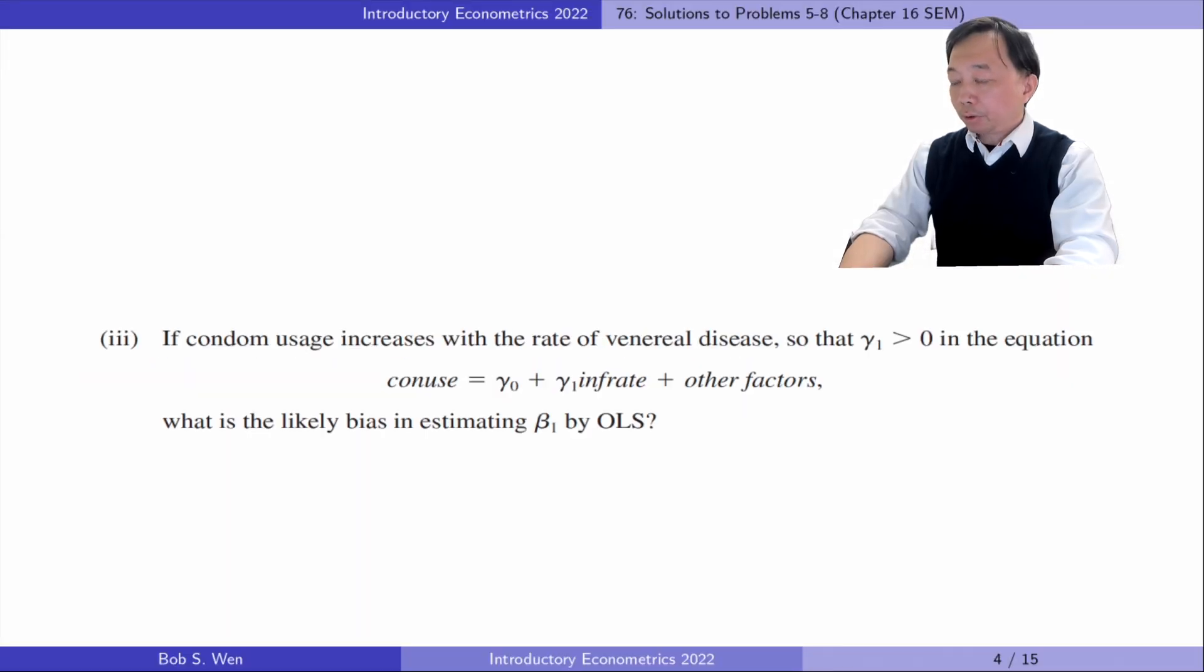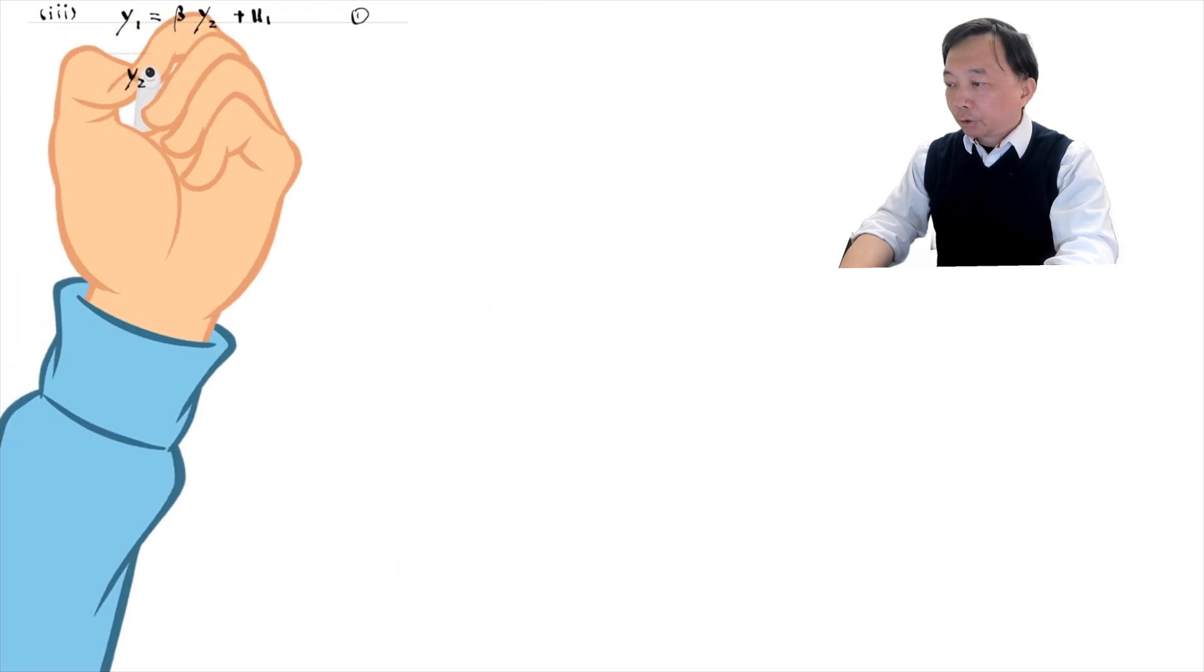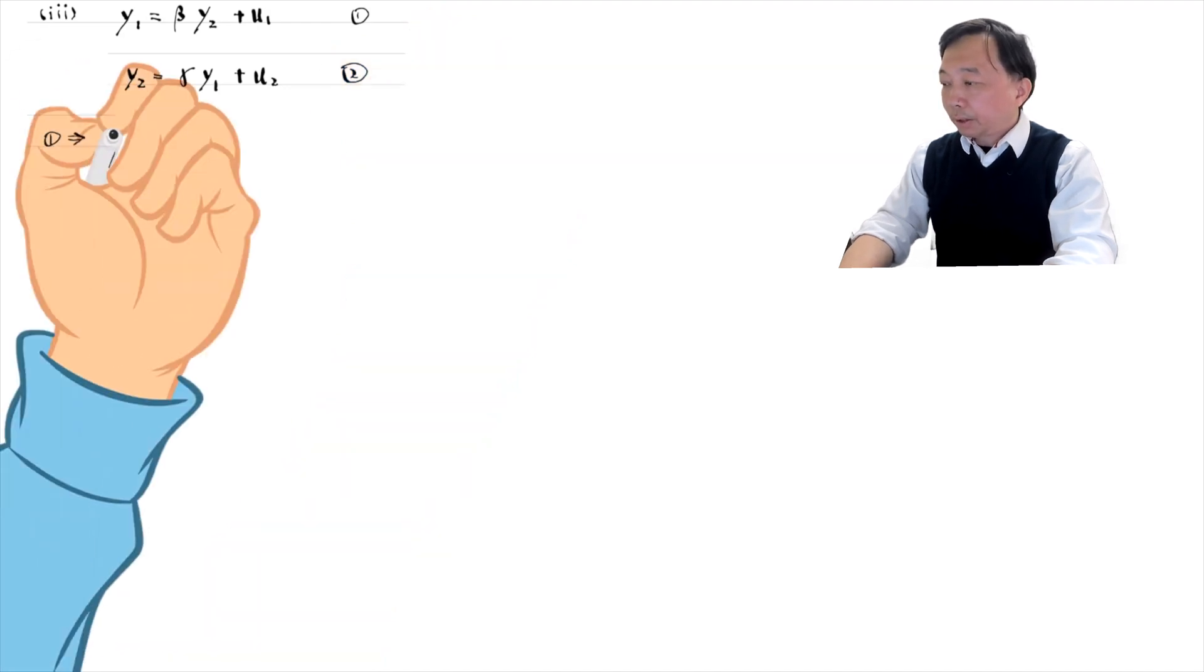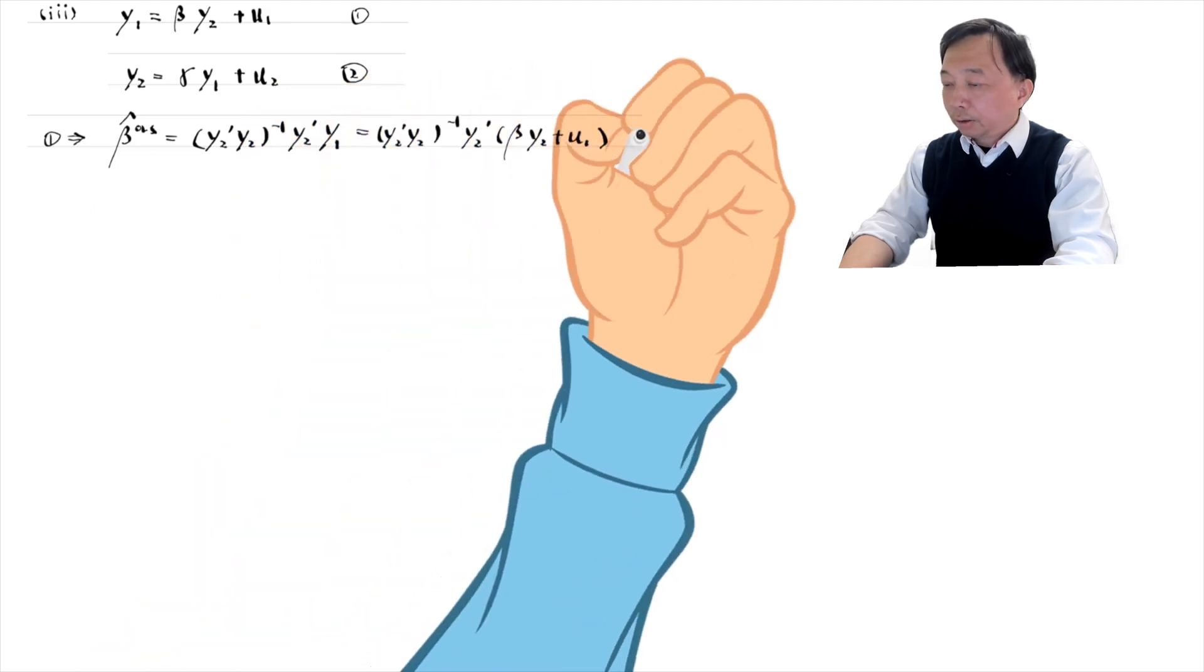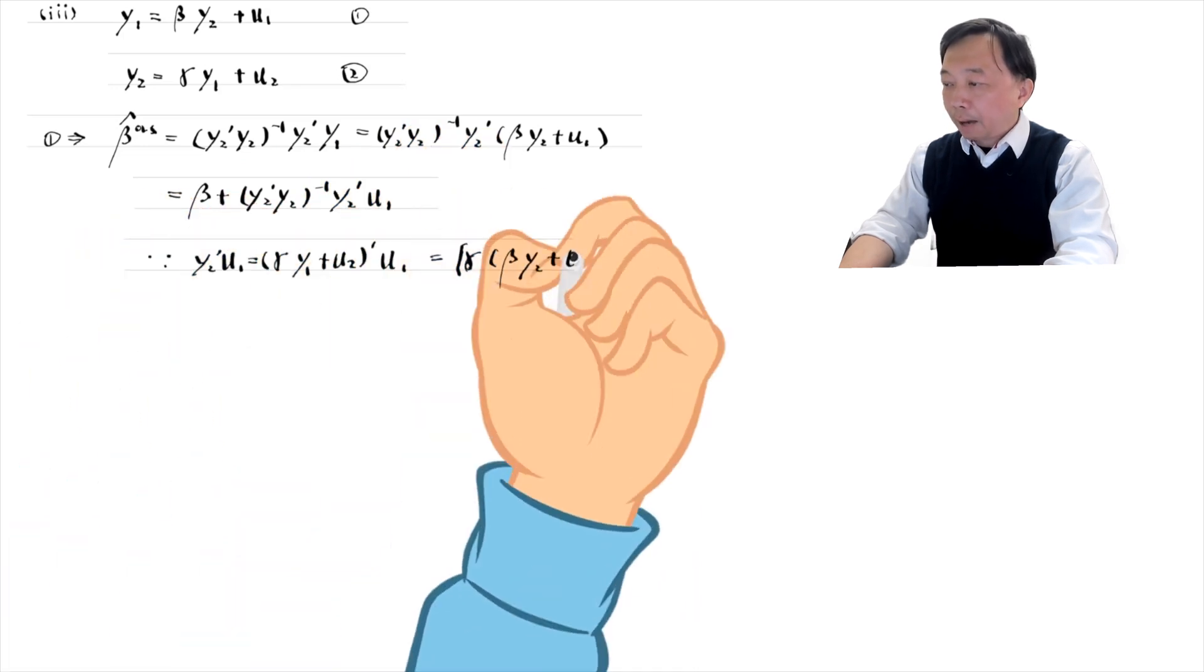In part three, if condom usage increases with the rate of venereal disease, so that gamma one is greater than zero in the equation conuse = gamma zero + gamma one times infrate + other factors, what is the likely bias in estimating beta one by OLS? We can prove that the OLS estimate of beta one is biased and inconsistent. We write the infection rate y1 and the condom usage y2. Using the matrix notation, we can show that the OLS estimator beta one hat is upward biased if gamma one is positive.